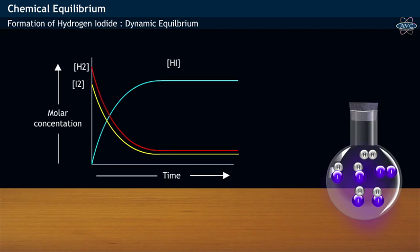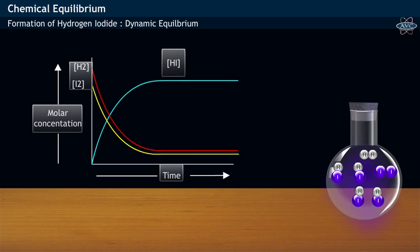Graphical Representation. When the concentration of reactants and products are plotted against the time taken, the following graph is obtained.